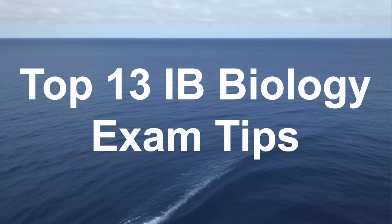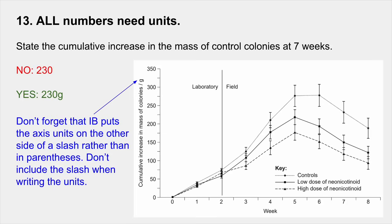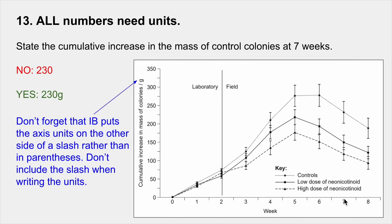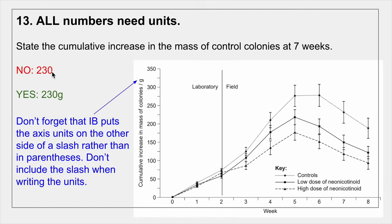I'm going to give you my top 13 IB Biology exam tips, starting with number 13: all numbers need units. An example question: state the cumulative increase in the mass of control colonies at seven weeks. You would find seven weeks, look for the control colonies with the dotted line, use your ruler, and lay it parallel to the x-axis to see exactly where the line crosses the y-axis — it should cross at about 230.